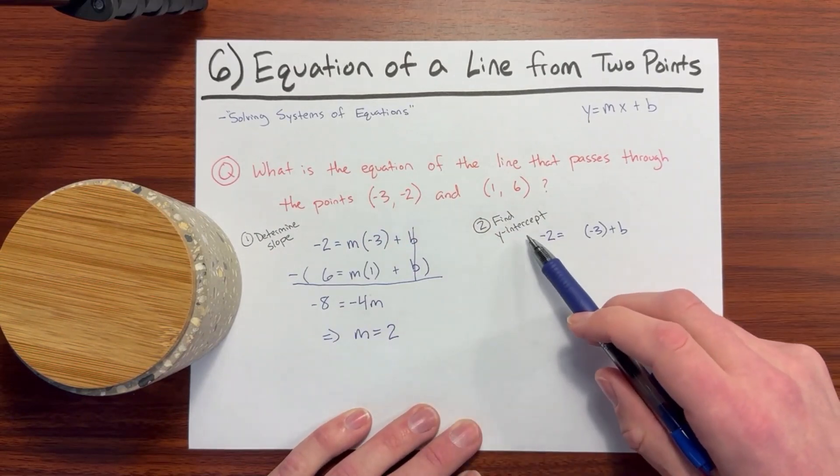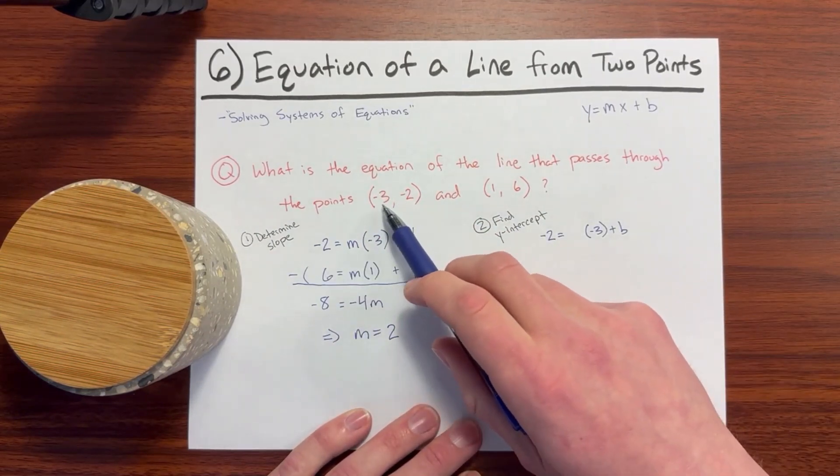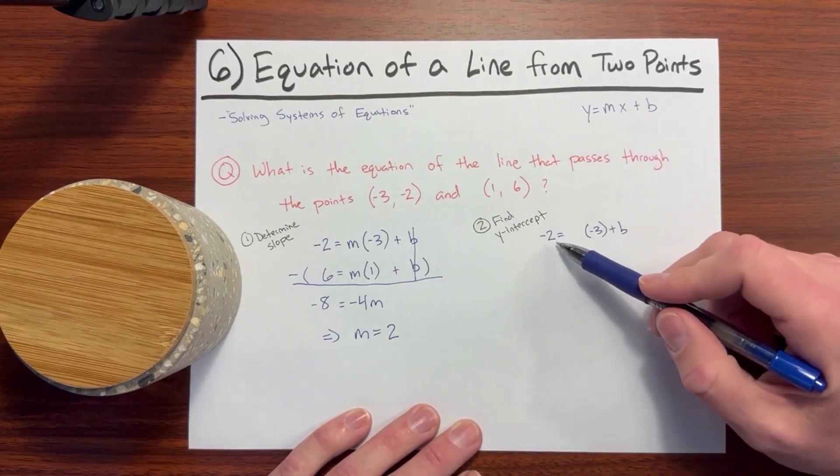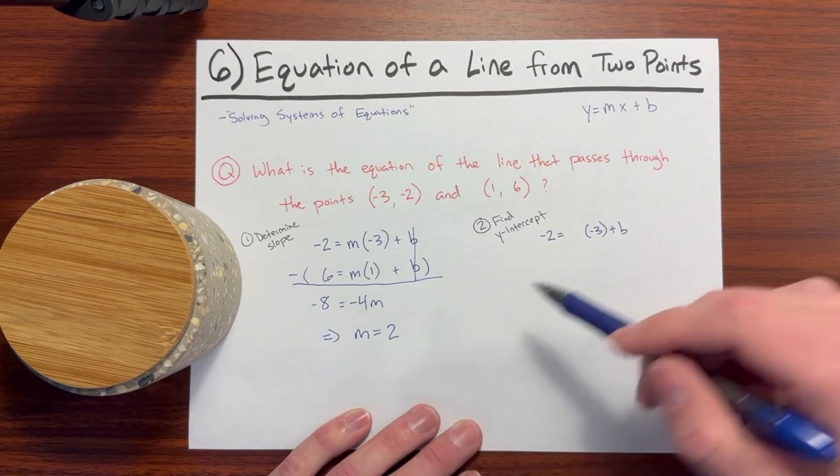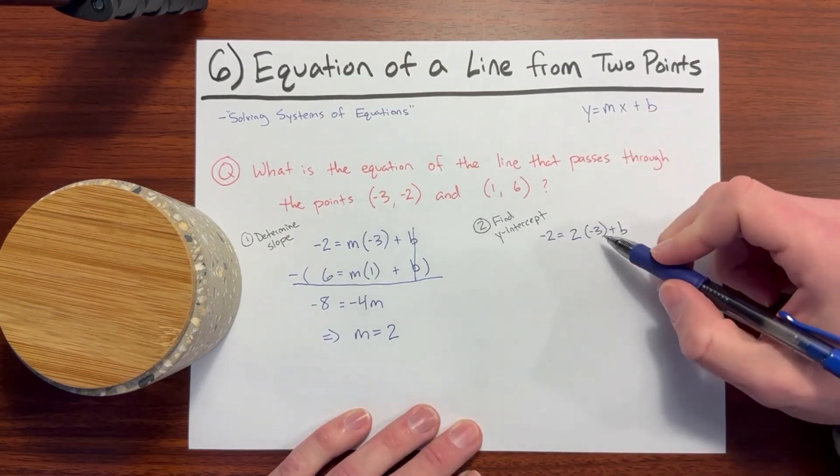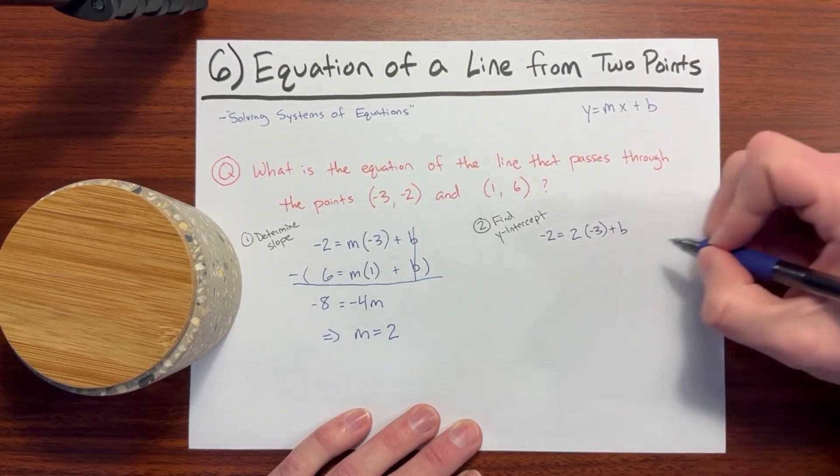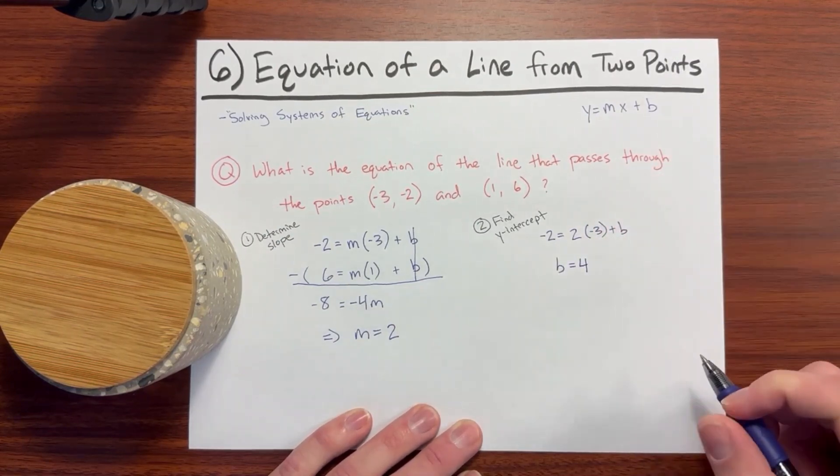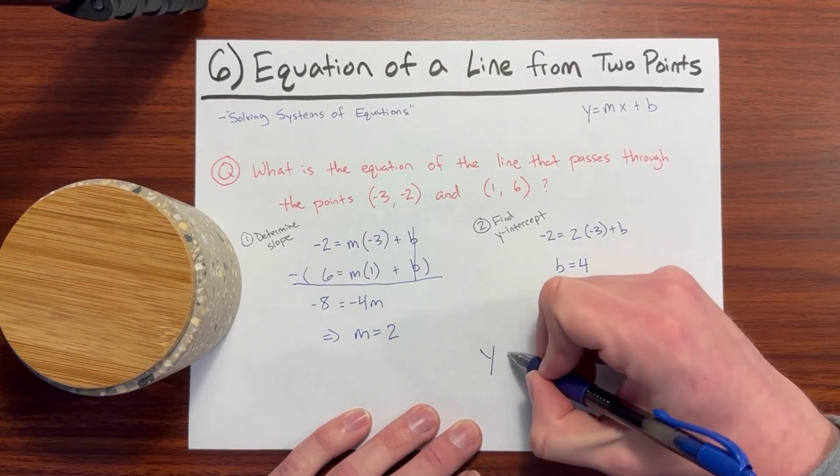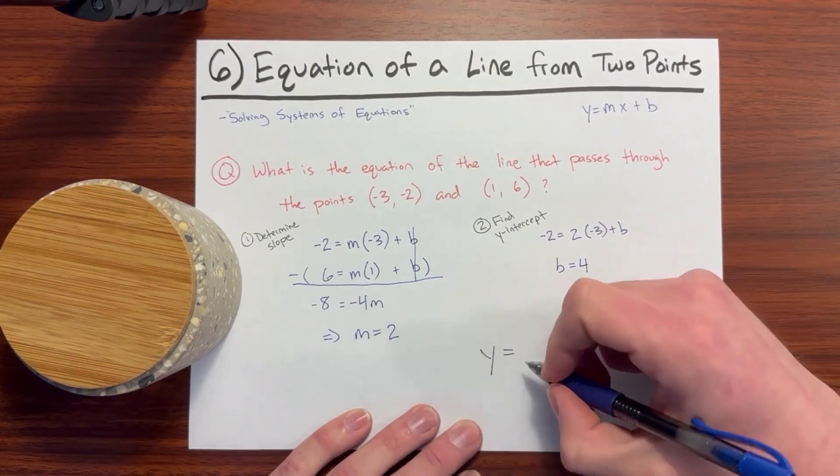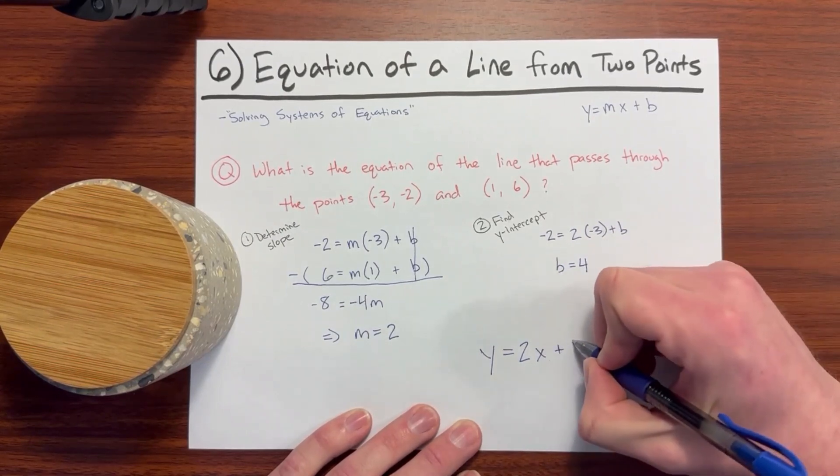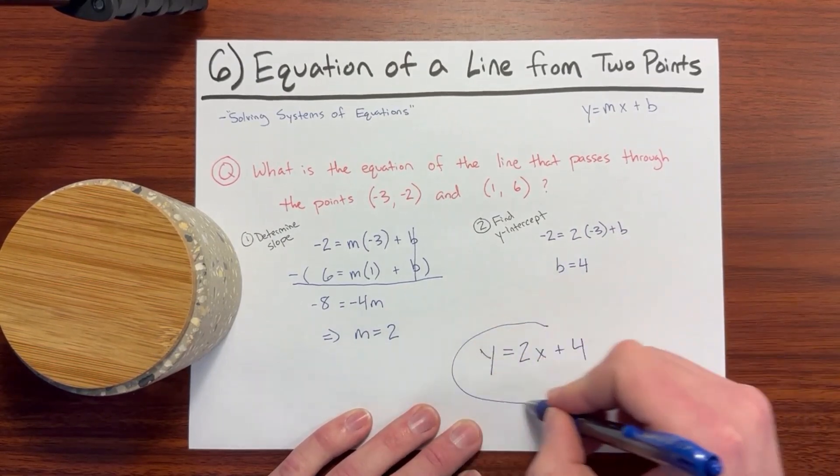Then we will find the y-intercept. Again, we can use point negative 3, negative 2 in the slope formula. So negative 2 equals, we determine the slope to be 2 times negative 3 plus b. Now we only have b to work with and that works out to be 4. Putting all of this together then, we have y equals slope of 2. So 2x plus 4. And that would be your answer.